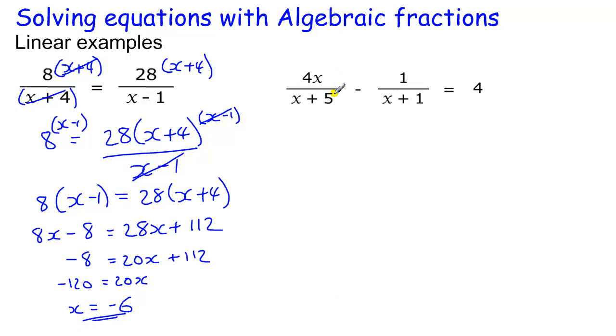Another one with two fractions on one side and a number on the other. Still the same process, we multiply by this x plus 5, times each term by x plus 5, so we times that by x plus 5, times this by x plus 5, and times this 4 by x plus 5.